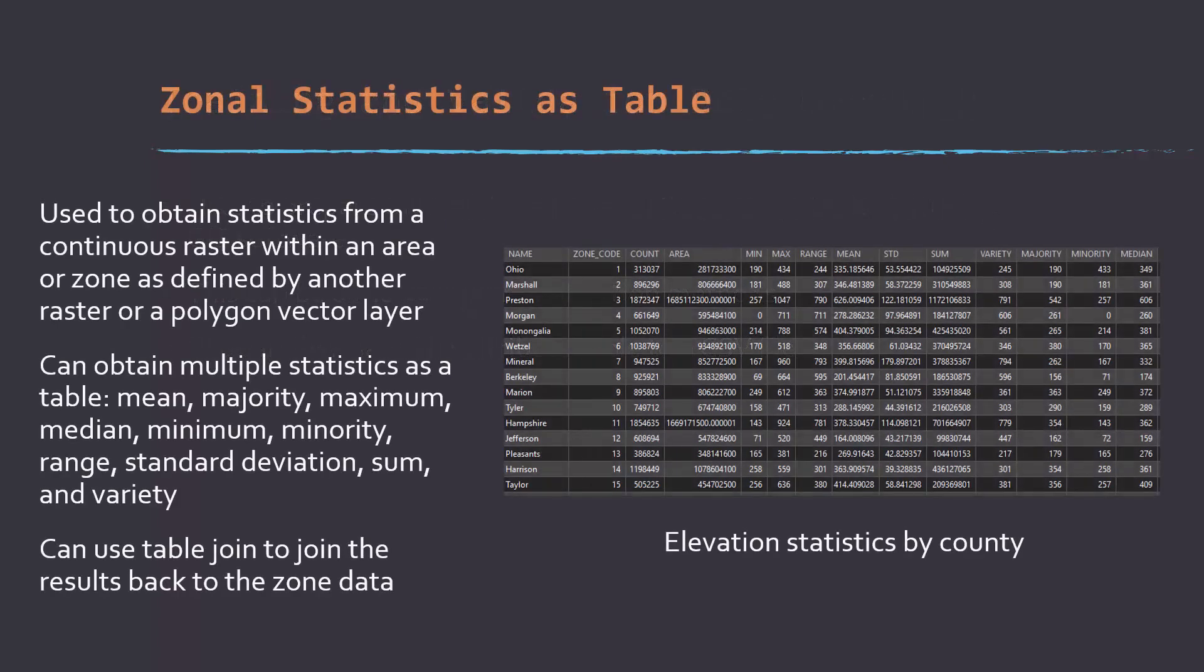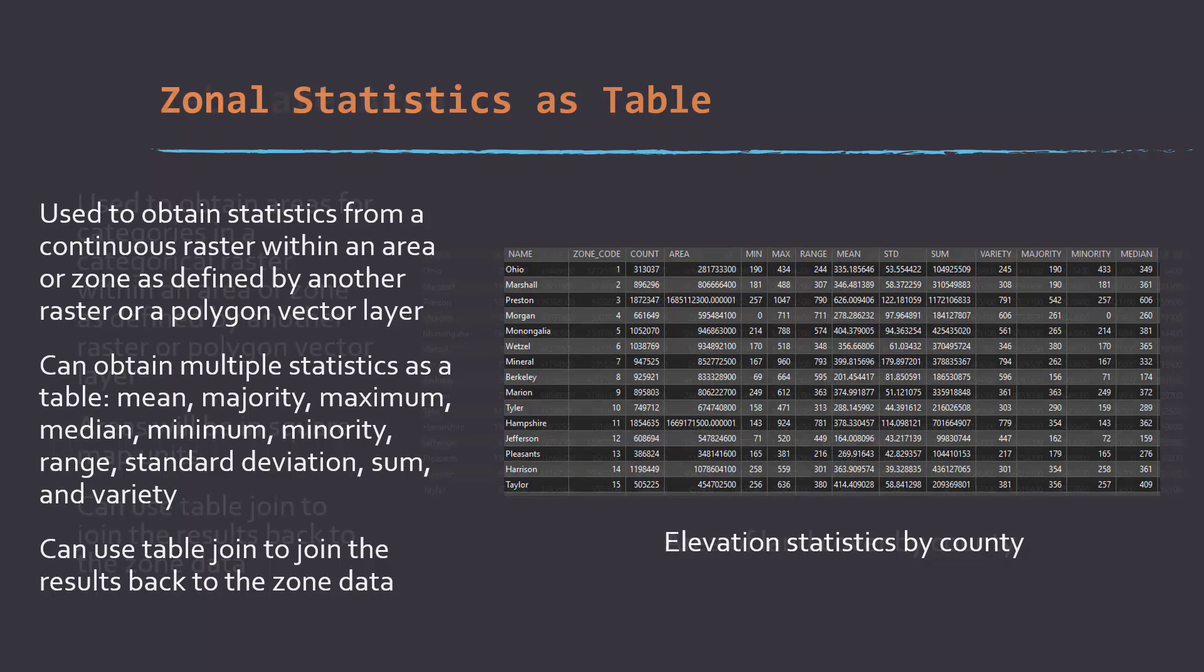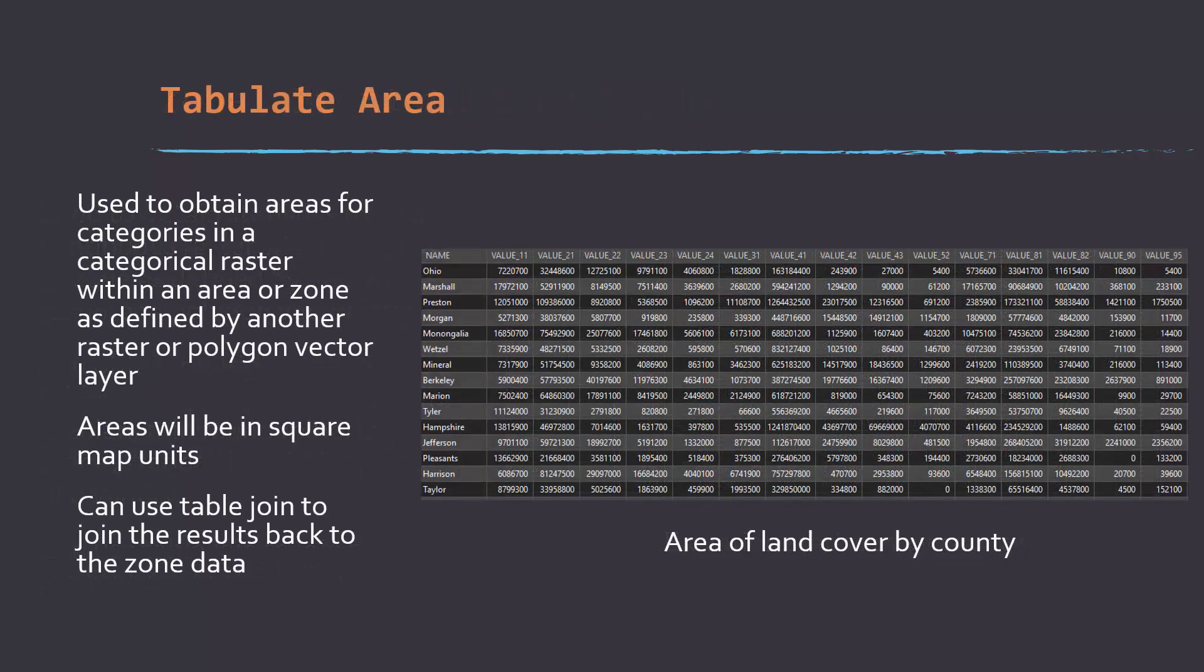So here's some tools that you might find useful for developing training data. So zonal statistics as table, it could be used to extract statistical information from grids within the area of polygons or along line segments. So if your training and validation units are polygons, you could summarize your predictor variables using zonal statistics as table. If you wanted to summarize categorical data, then you could do that with tabulate area. So that would return back a land area of each category by zone. So here we have land cover types per county.